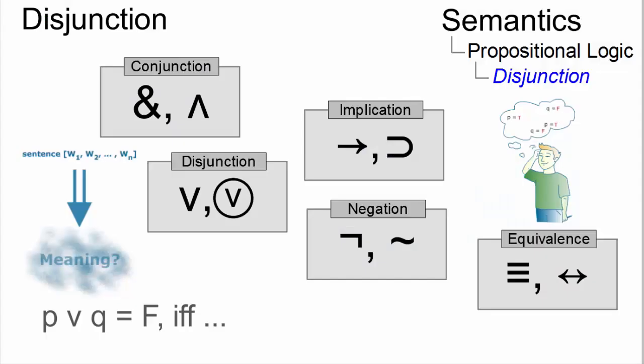In propositional logic, disjunction is used to create a compound proposition which is false only if both propositions or disjuncts in it are false.